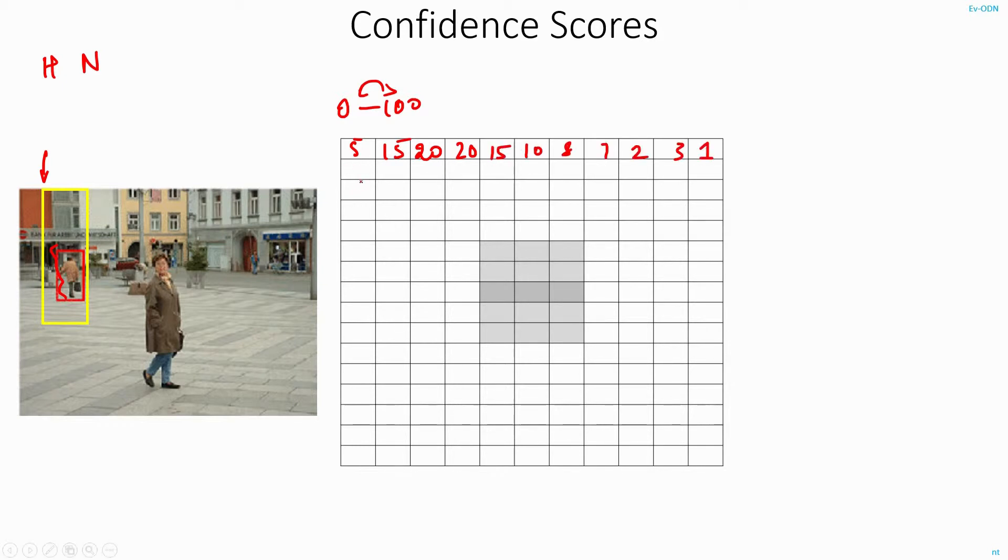So this way, at most places in the image, the confidence scores will be very low, except near the vicinity of this person. At this sliding window position, the confidence score might be around 70%. Slightly to the right, it might be 75. And then it will start reducing to 70, 65 and so on.